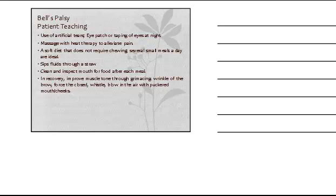In recovery, patients can improve their muscle tone through grimacing — all the things we do to check for that seventh cranial nerve: grimacing, whistling, puffing their cheeks out, blowing their cheeks out, moving their forehead and their eyebrows, lifting their eyebrows.